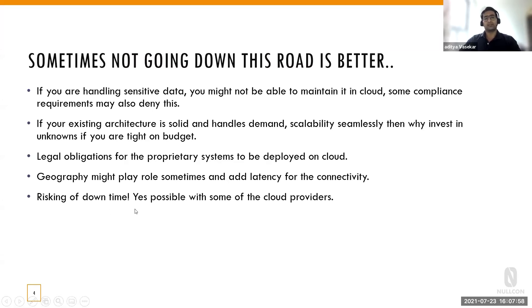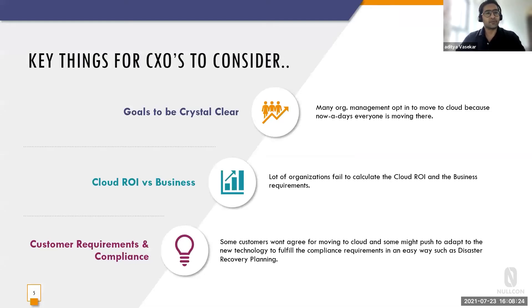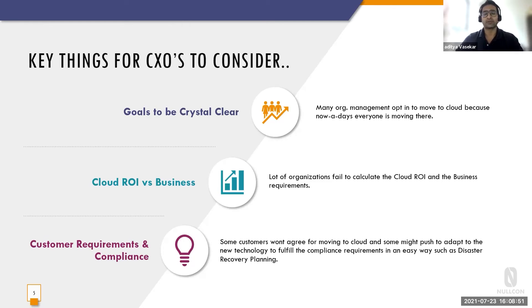Then there's the risk of downtime — backup and DR, those kinds of things. SLAs are maintained at around 99%, but there are certain scenarios where it might happen and you might risk certain processing or data. There are key things for CXOs to consider before starting migration to the cloud. Goals need to be crystal clear. Many organizations and their higher management opt to move to the cloud without any specific goal, agenda, or vision — no clear plan for how they want to scale up or what direction they want to take the organization.